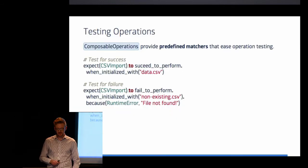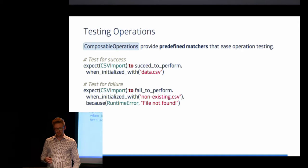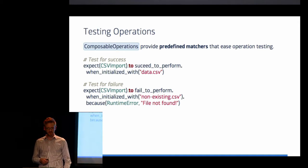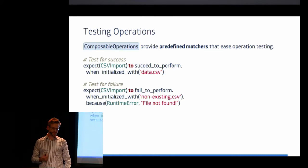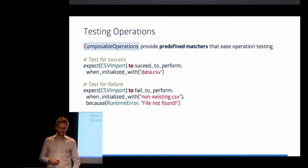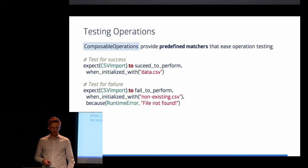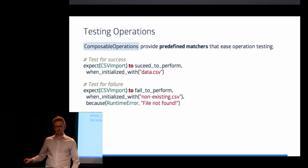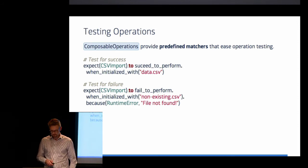The last thing I want to talk about is testing operations, because the business transactions are a very important part of your application, and I aimed at simplifying the testing by providing predefined matches for our spec. So there is a measure for the success case and the failure case. If you want to test the successful execution, you simply expect the operation to succeed to perform when initialized with a given set of positional arguments and keyword arguments. And then there is the failure case, where you expect the operation to fail to perform, and you can specify an exception and a message that should be raised.